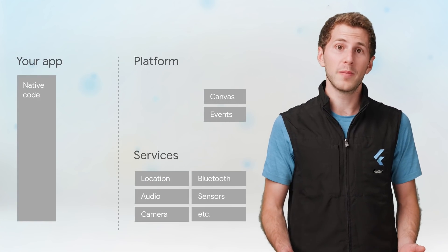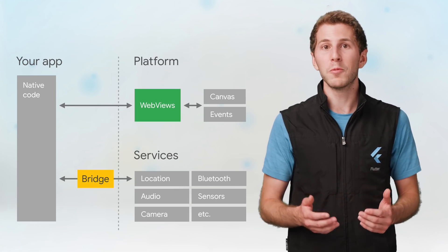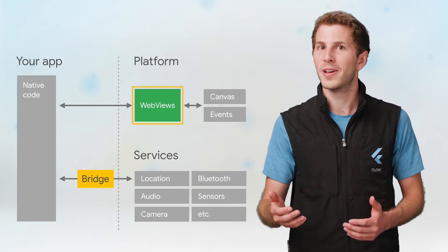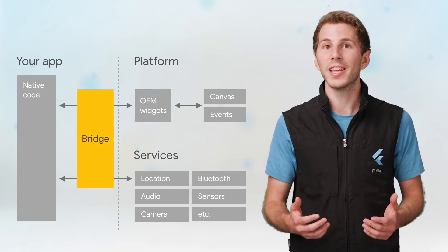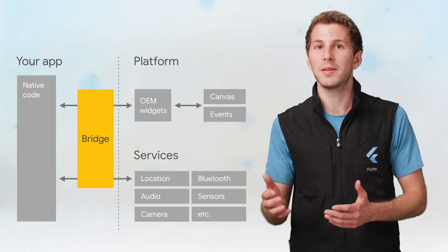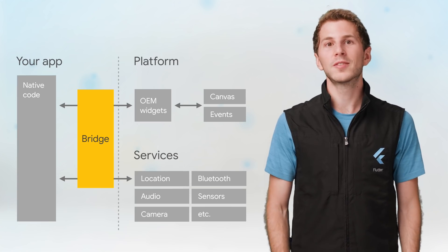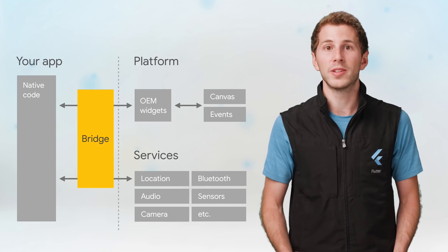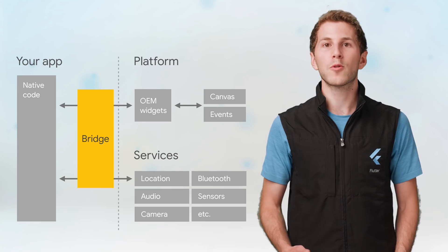Another approach to cross-platform development uses only one code base, but it involves either web views, in which your app creates HTML and displays it in a web view on the platform, or building a bridge from code in a common language like JavaScript to those native UI components like buttons and menus. Whenever you access UI elements, which could be as frequently as 60 times a second with actions like swipe animations and transitions, your app's code has to communicate through a bridge, which may have performance implications.